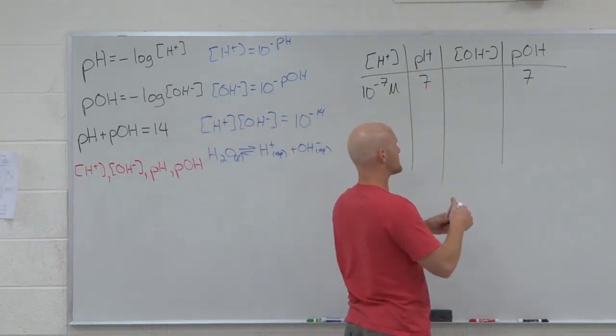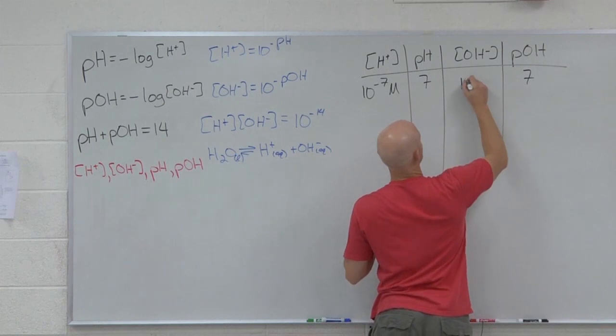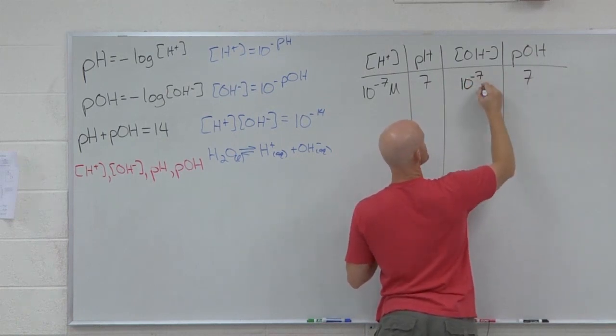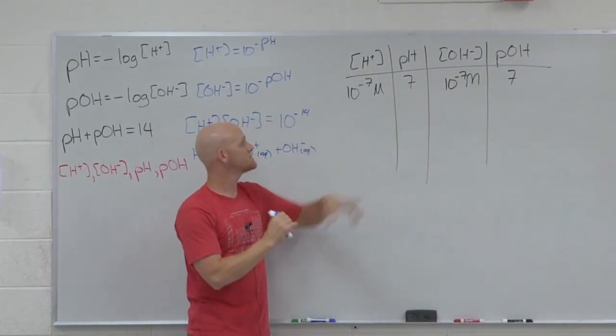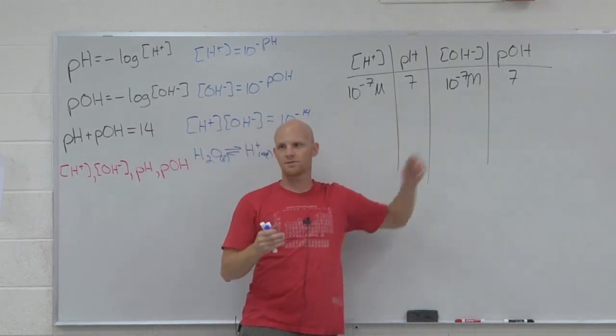And then what would the hydroxide concentration be? 10 to the negative pOH, in this case seven as well. So we started out with just pH seven, and we were able to find the other three.